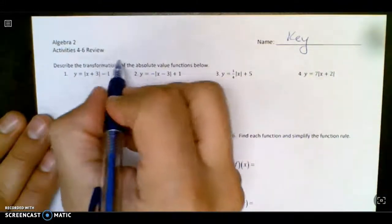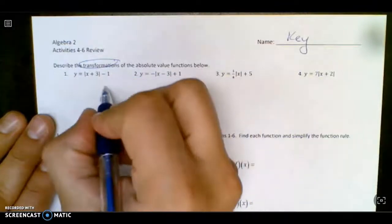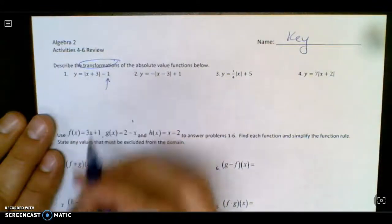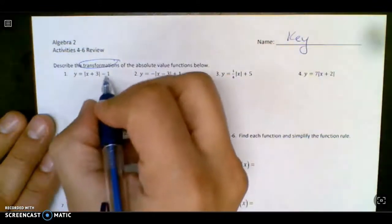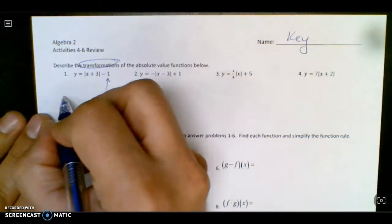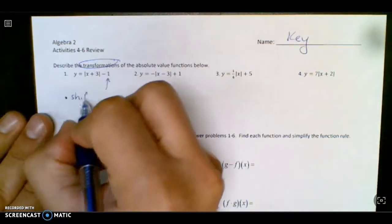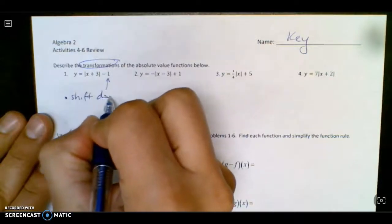So if we're doing transformations, I always look for the number at the back, not in the absolute value signs, and that will tell me my vertical shift. So this one would be, that negative 1 stands for shift down 1.